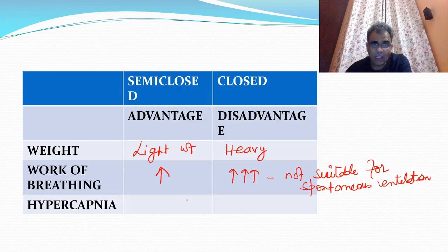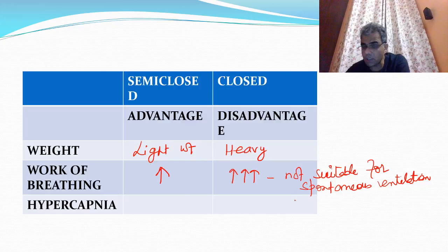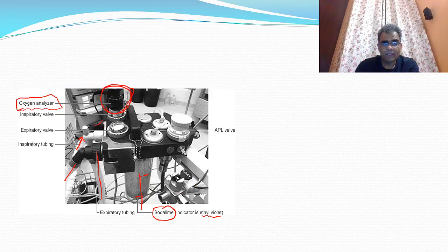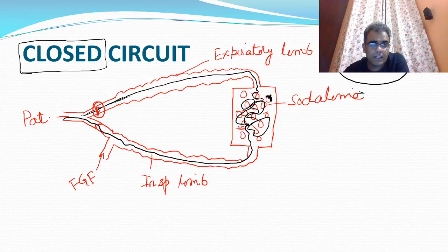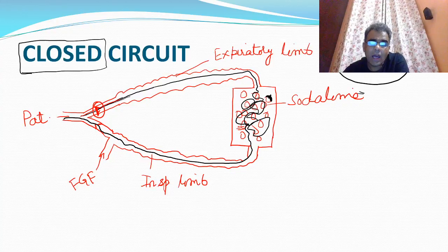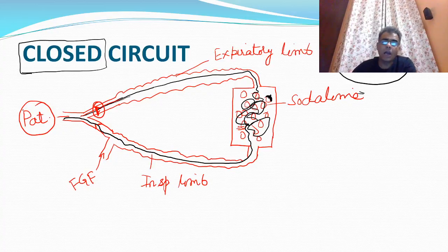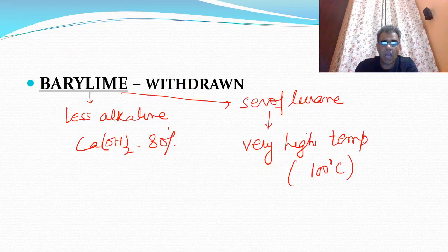There is also a possibility of dangerous hypercapnia with closed circuits. If soda lime becomes exhausted and more importantly if the unidirectional valve gets stuck, then CO2 will not be able to reach the canister and cannot be exhaled out into the atmosphere. It will accumulate in the patient and the patient may develop dangerous hypercapnia.